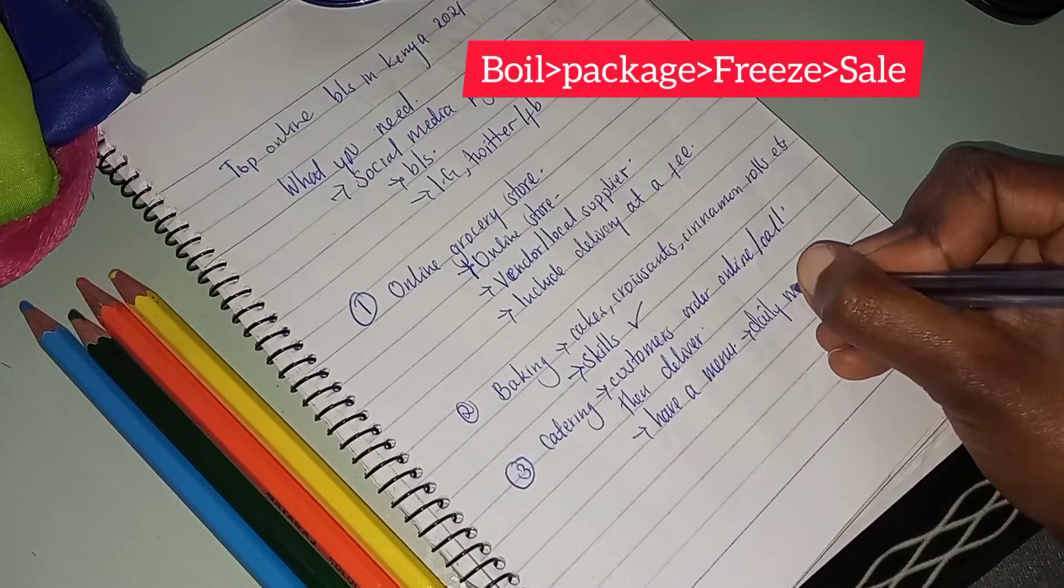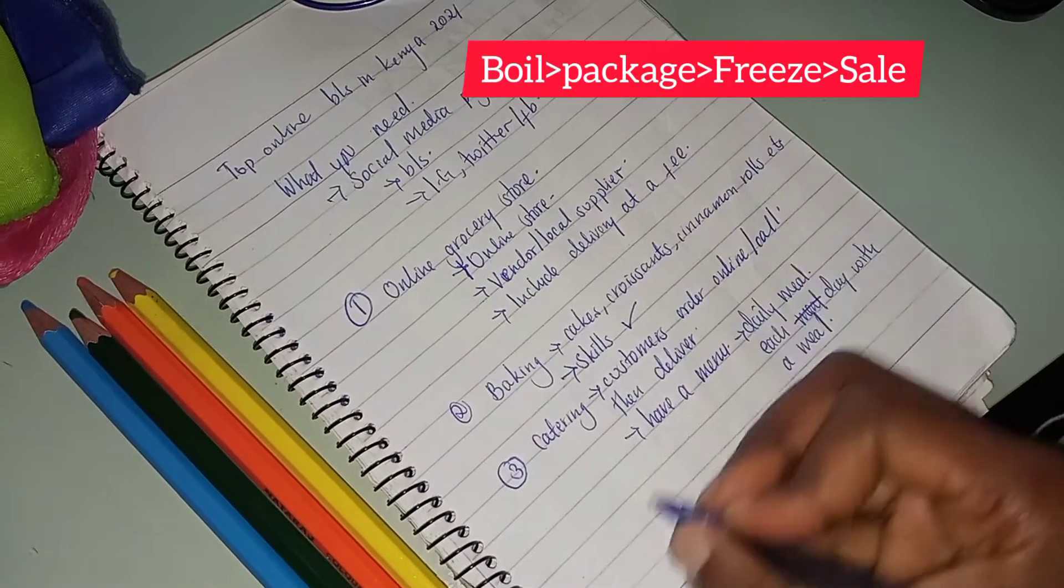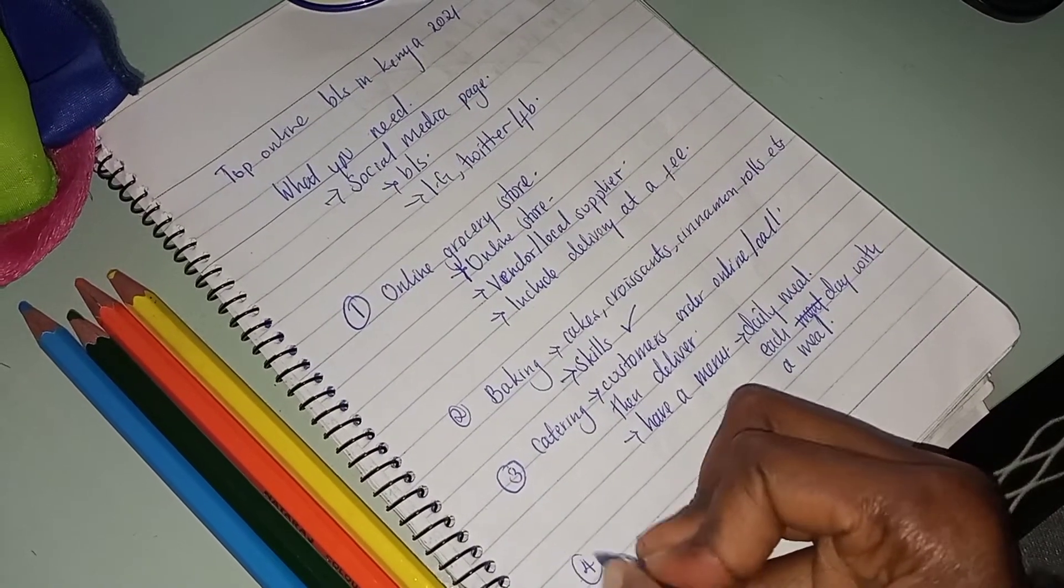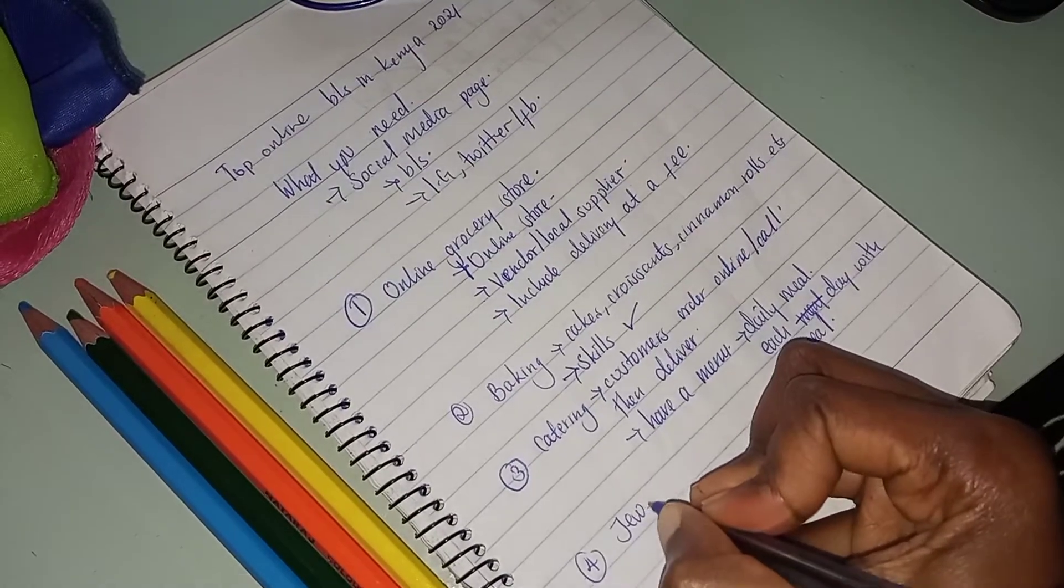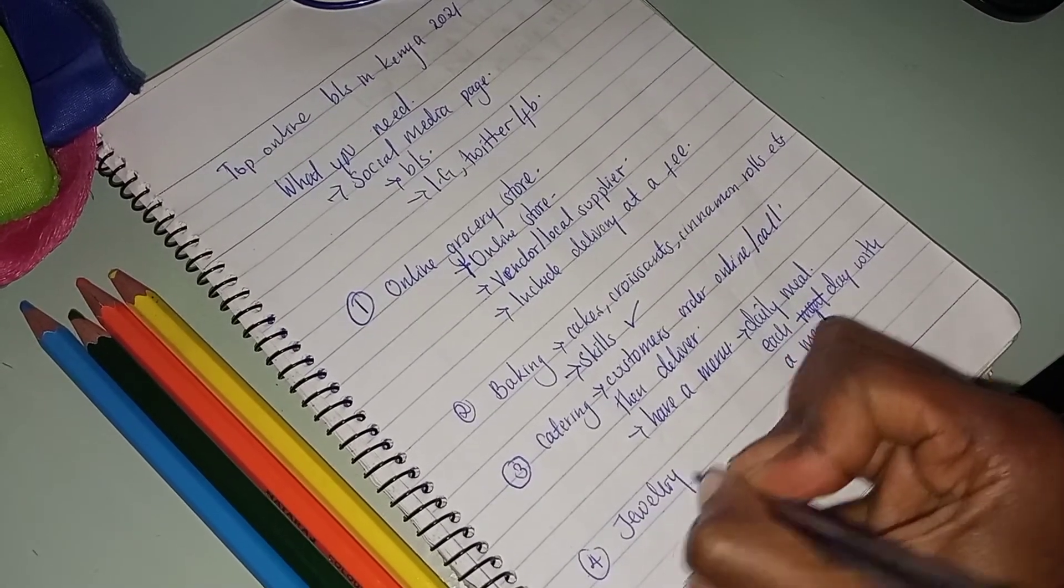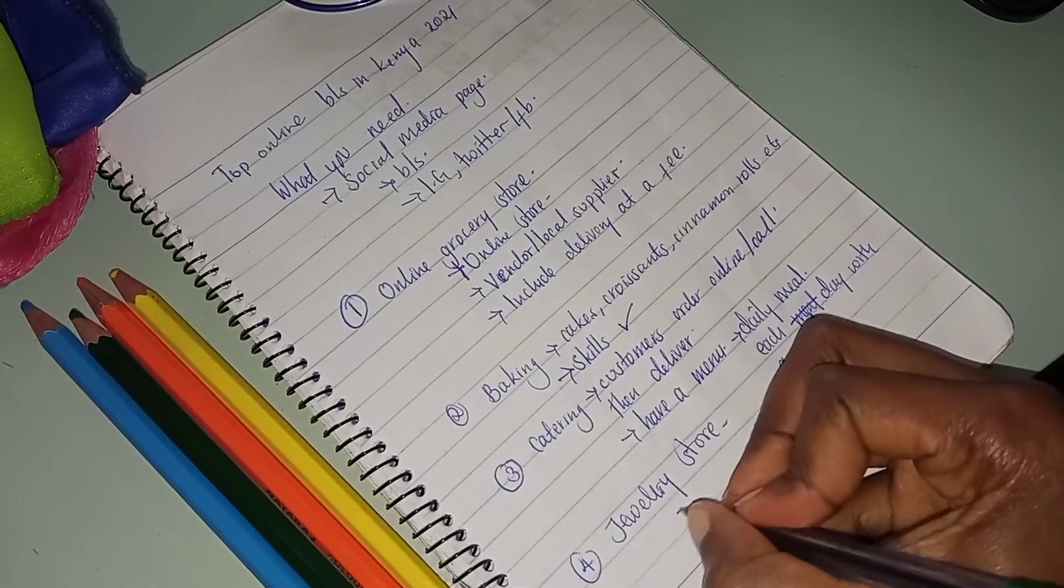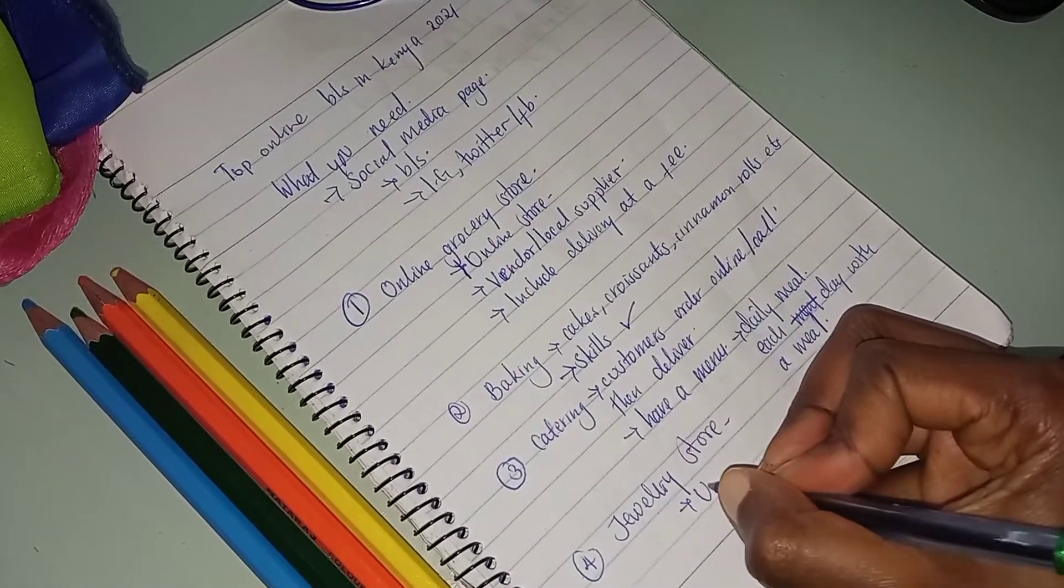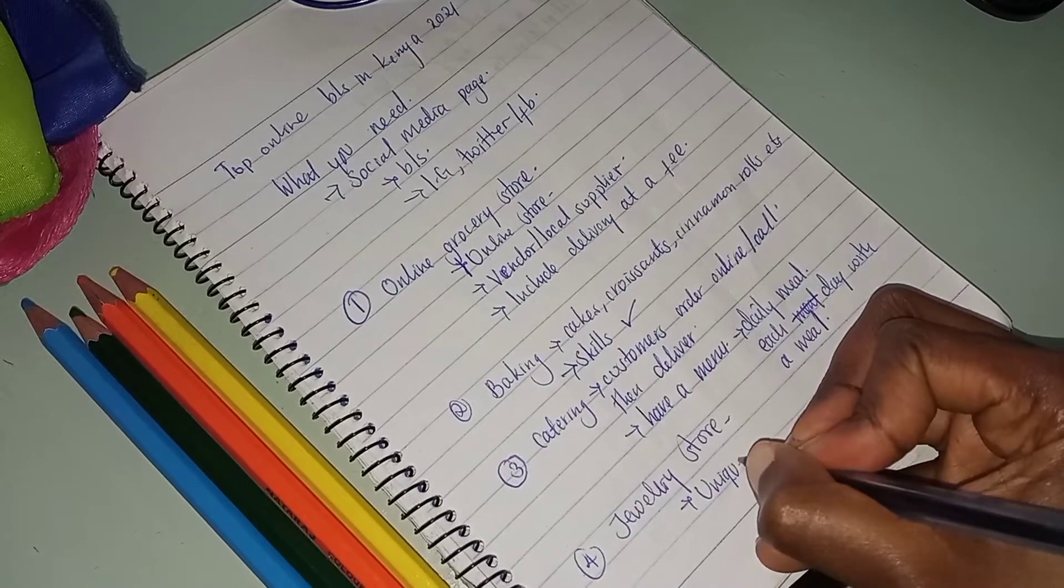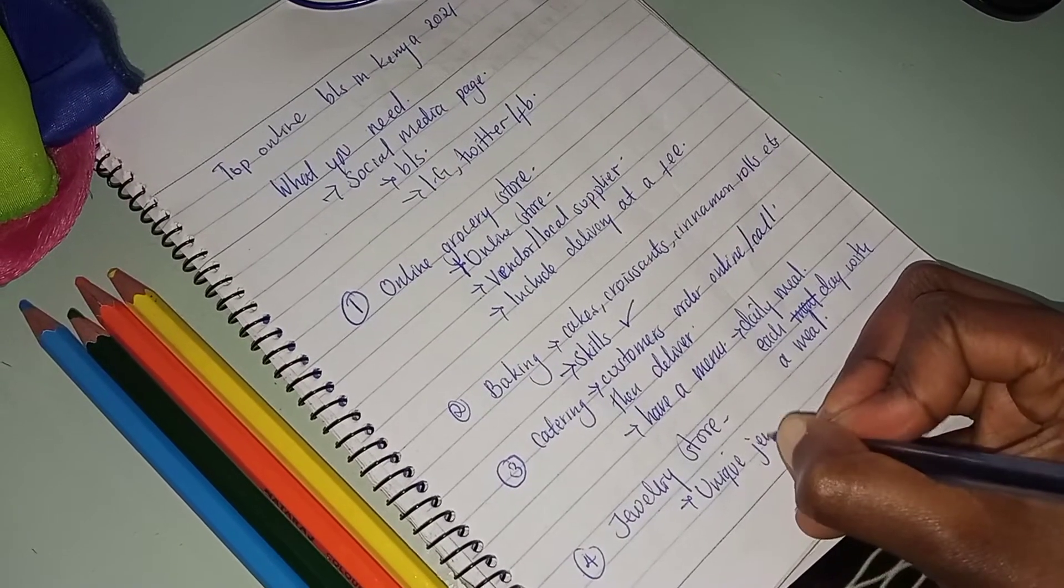The fourth business idea that you can do is jewelry store. You can sell earrings, necklaces, bangles, nose rings, rings, waist beads online. All you need is unique jewels, either local or imported ones.